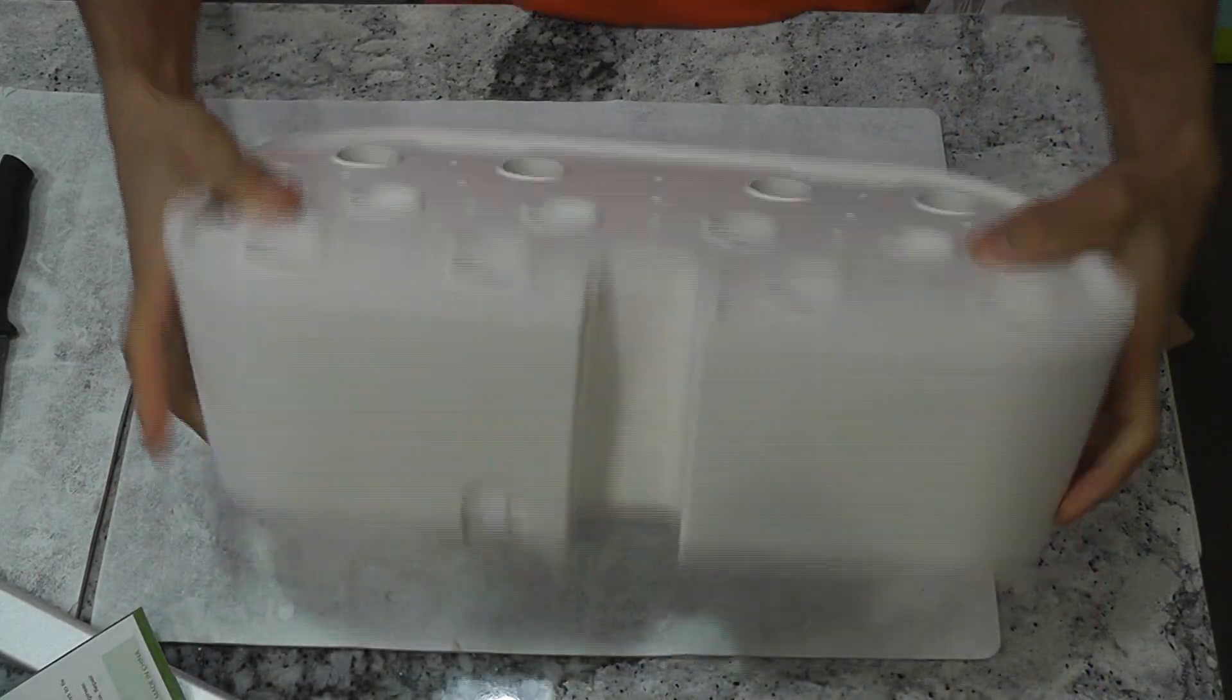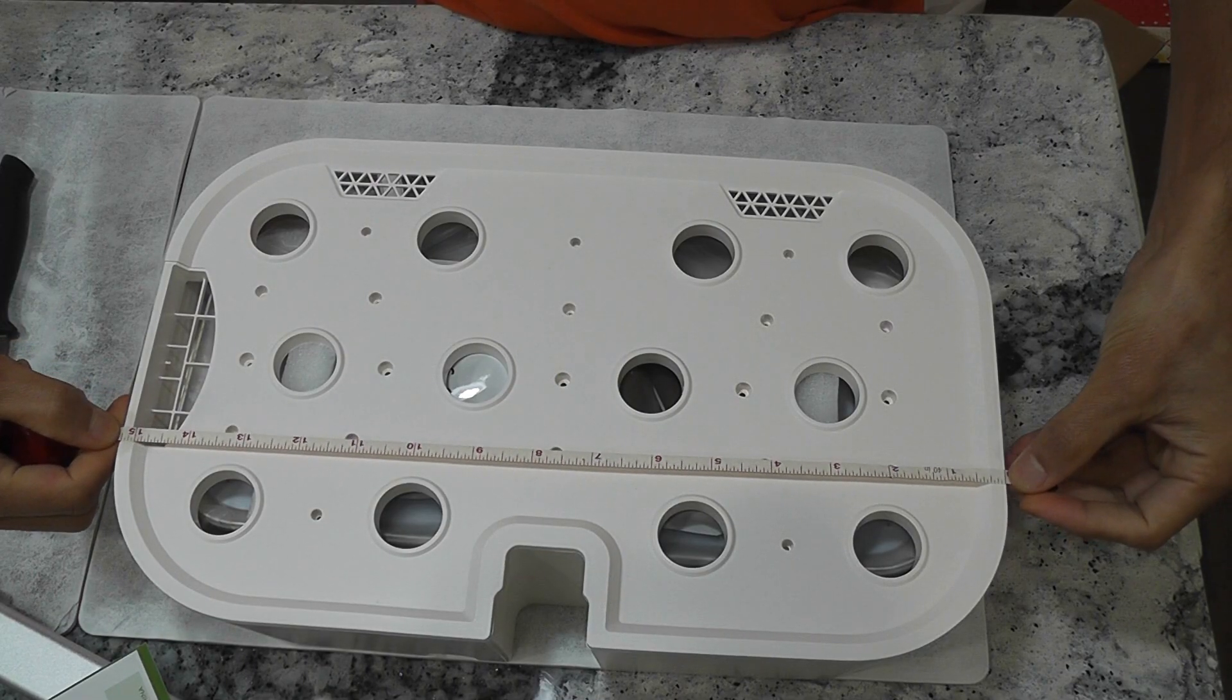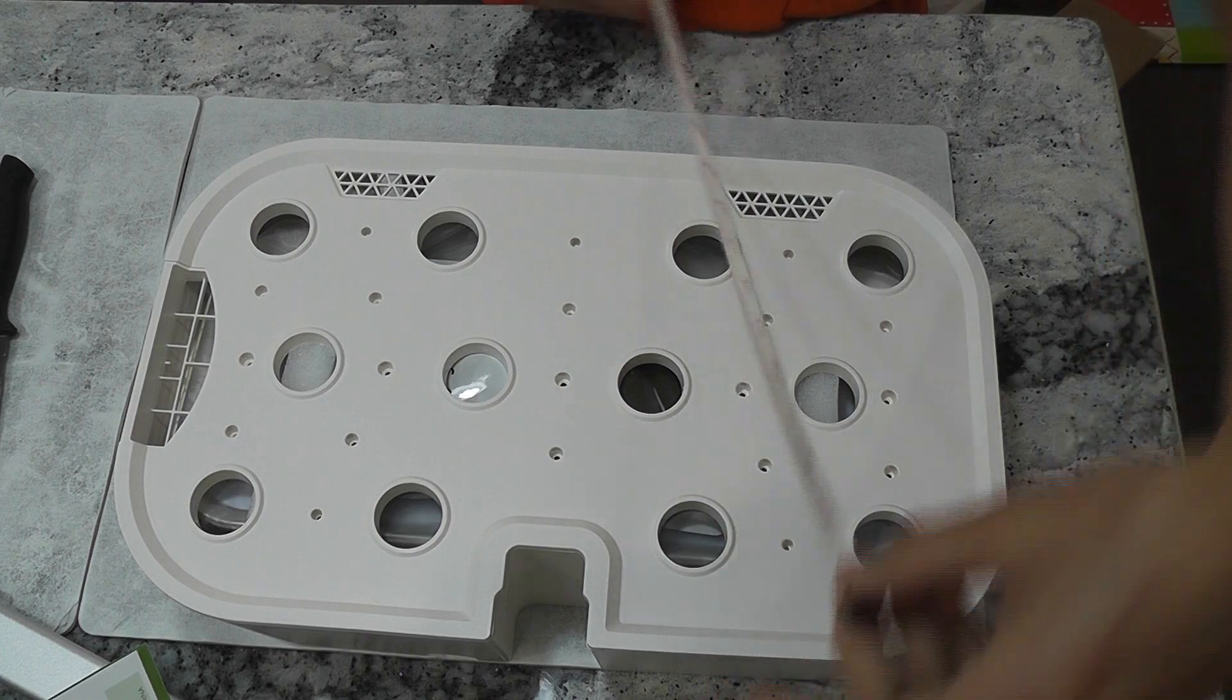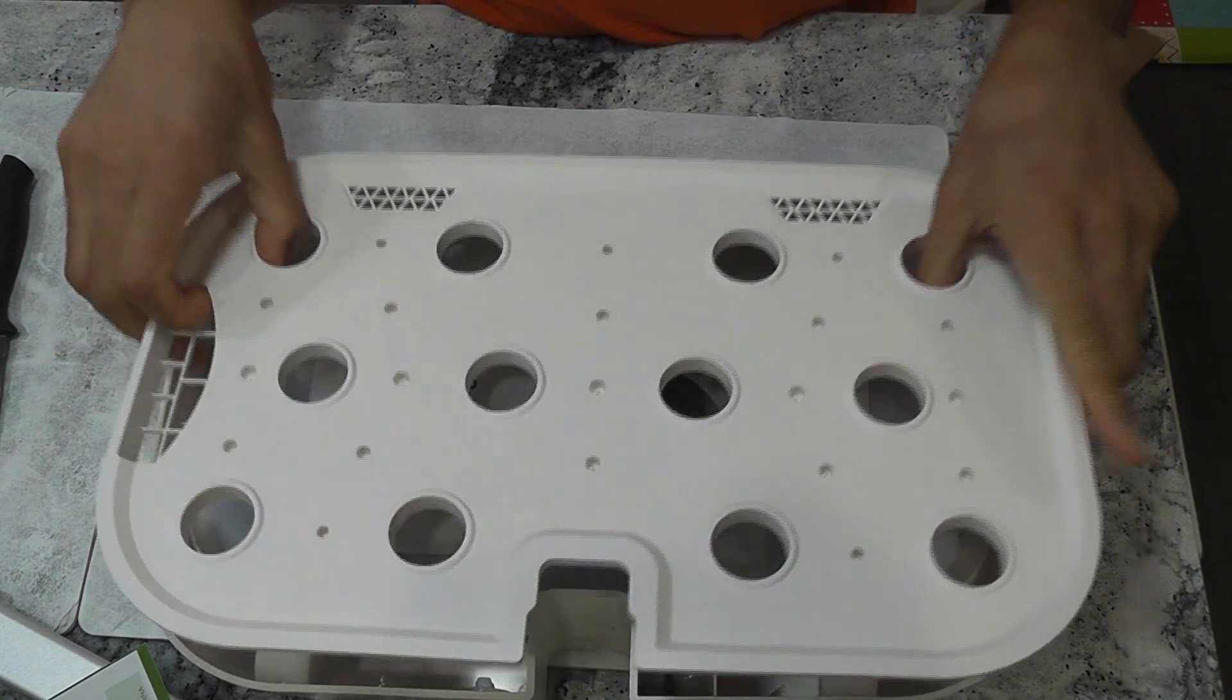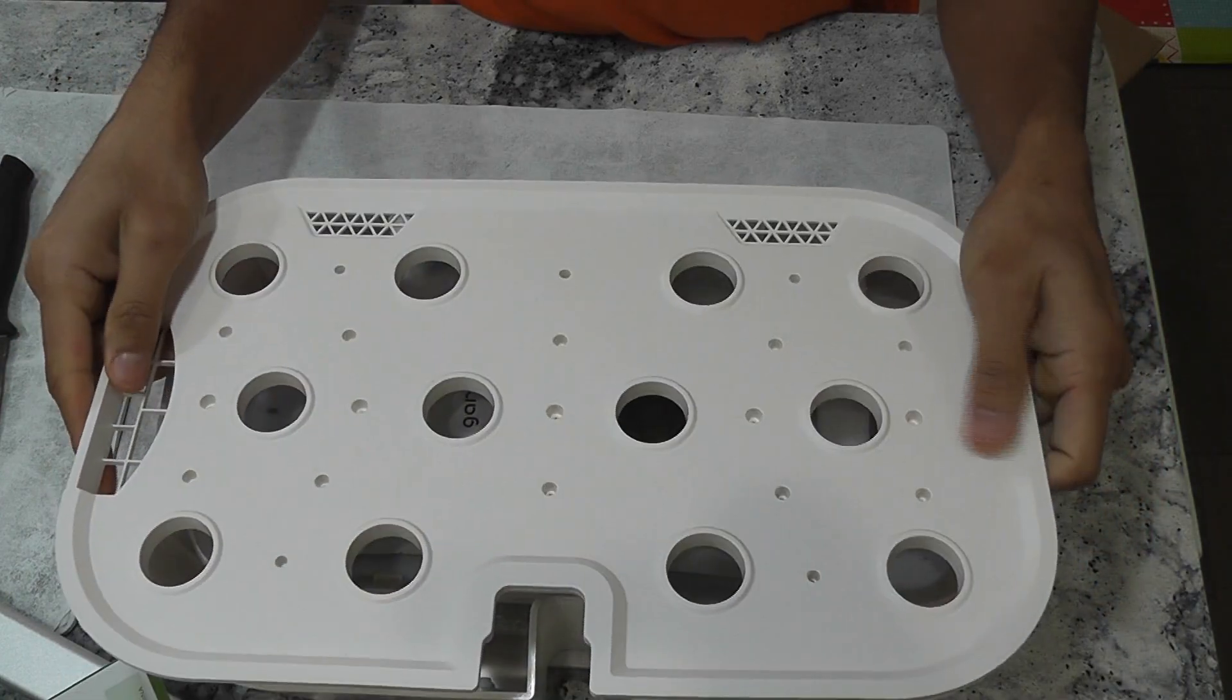Next up is the bowl. It is 4 inches deep, 15 inches wide and 9 inches long. Here is the grow deck. It supports 12 pods and the spacing between pods is very decent.